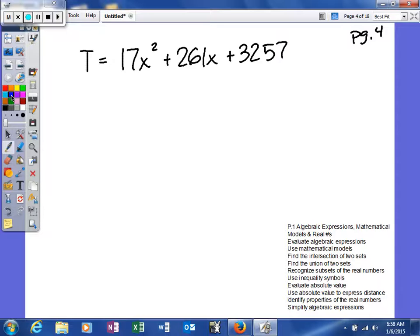It says T = 17x² + 261x + 3,257. This is basically the average cost of tuition T for fees of public four-year colleges adjusted for inflation. The formula T represents the tuition cost for U.S. public schools x years after 2000.